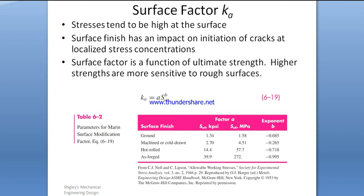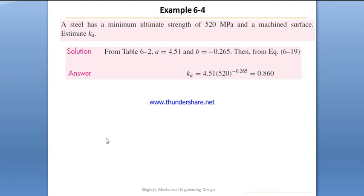Ka is equal to A times the ultimate stress to the power B, and we will always use metric units. Depending on the surface finish — ground, machined, cold drawn, hot rolled, or as forged — we have corresponding values of A and B.